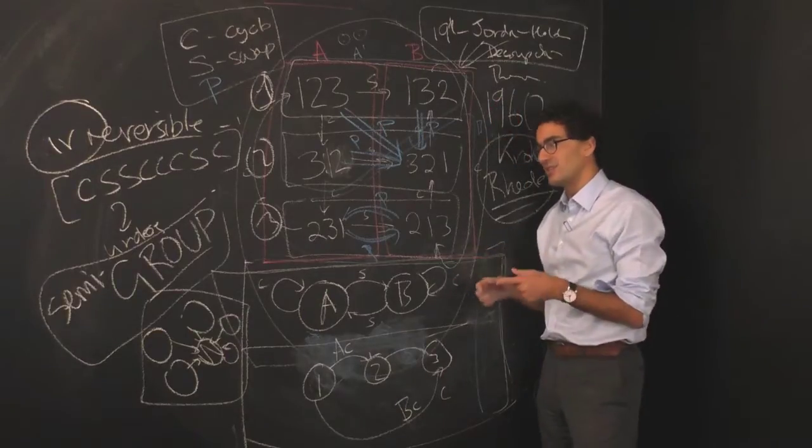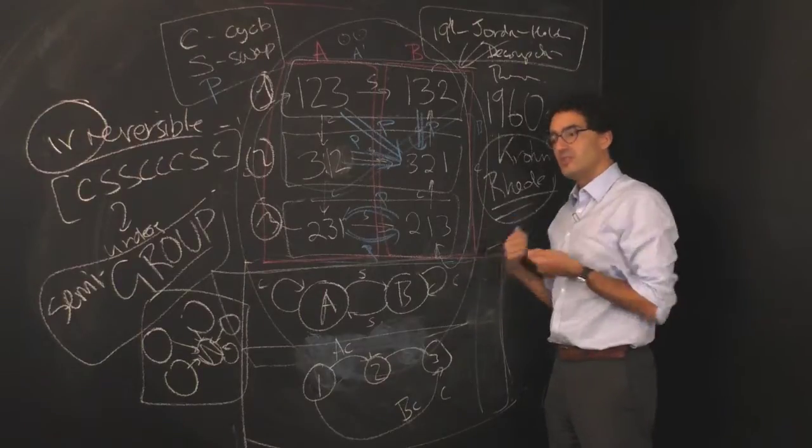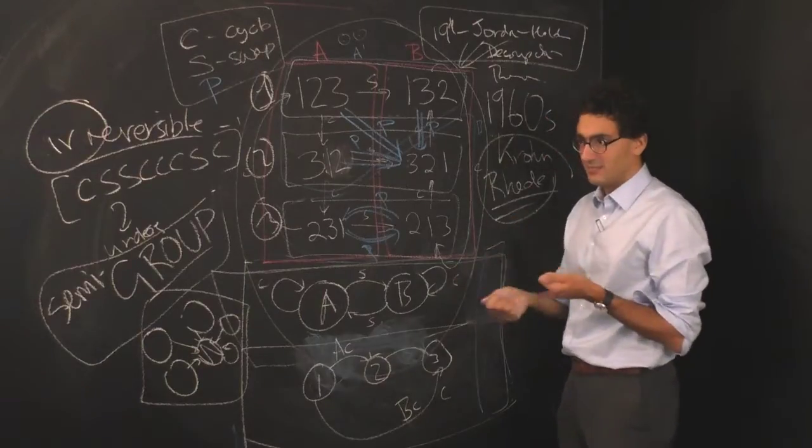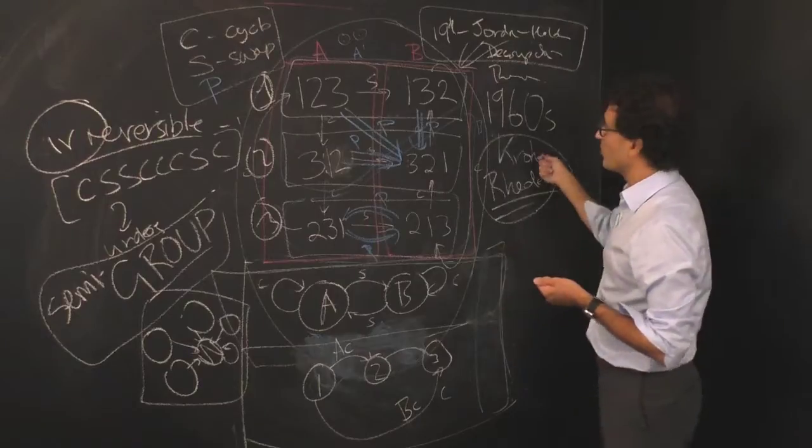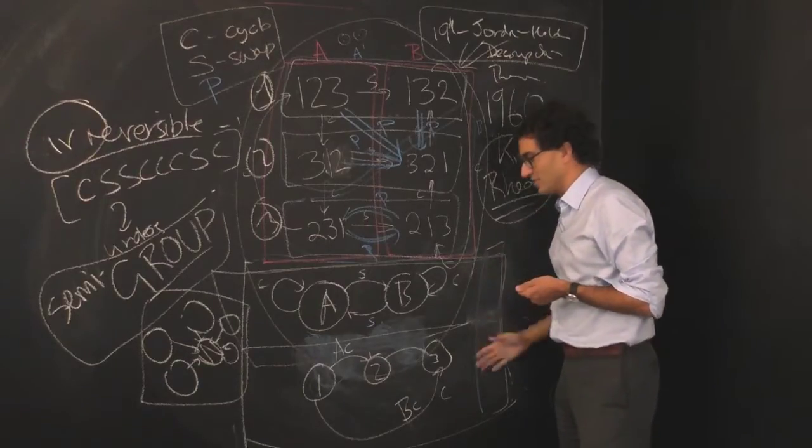We're very often in the situation where we can do something to a system. We have the freedom to do something to a system, and now we're wondering how the system is going to react. What the Krohn-Rhodes theorem does is tell you that there exists a decomposition like this.